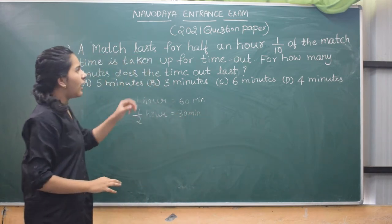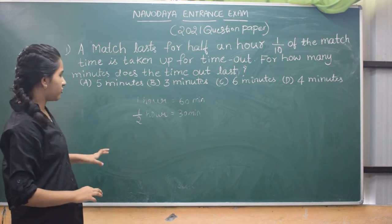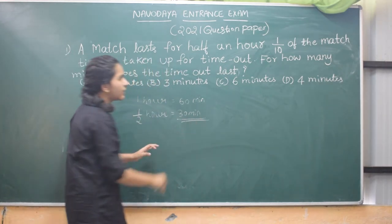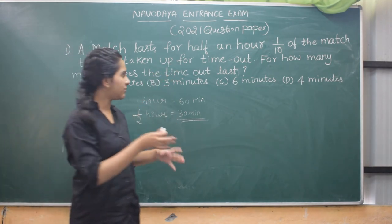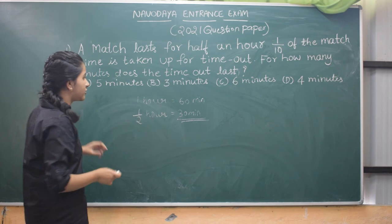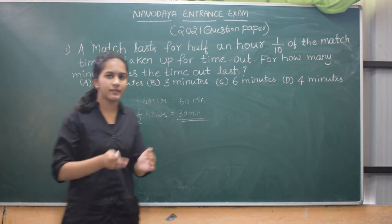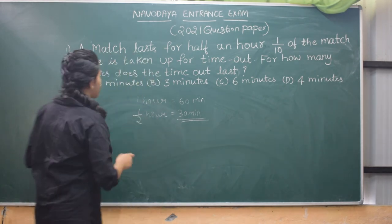Now, after one tenth of the match, the total match is for 30 minutes. That means after one tenth of the match they are taking a time out. Time out is nothing but a break after one tenth of the match. That means how many minutes break they are taking—that's what we should find out.